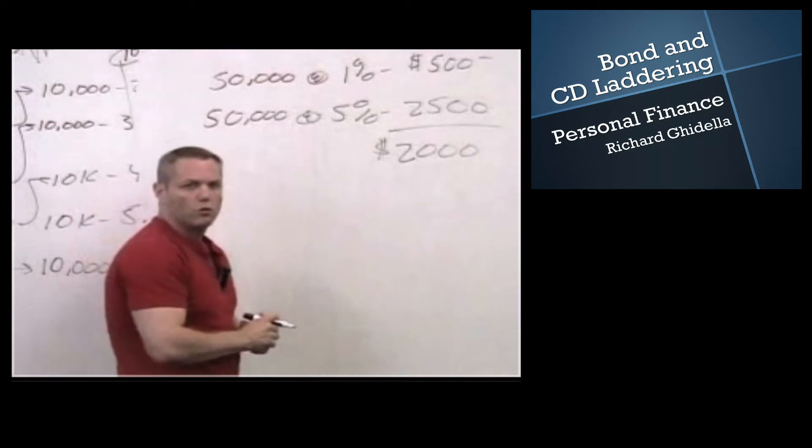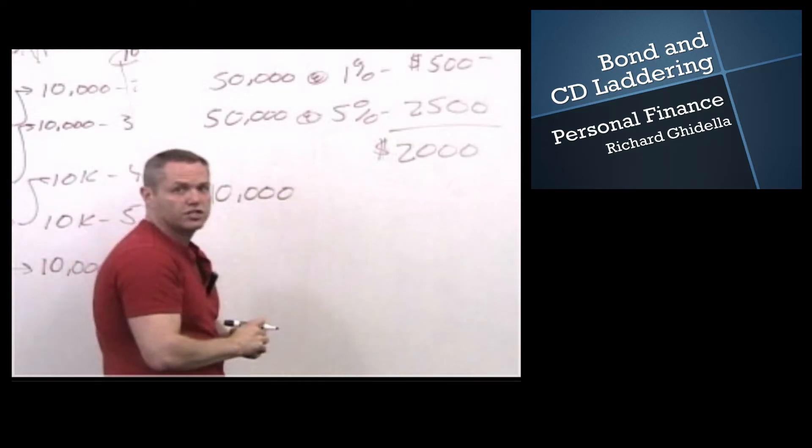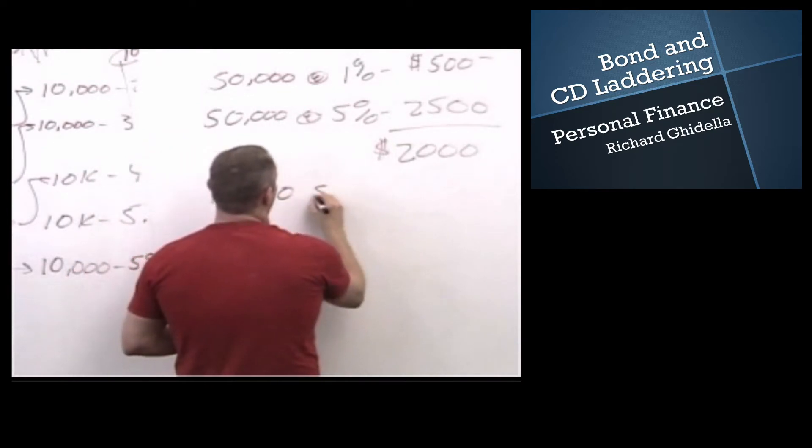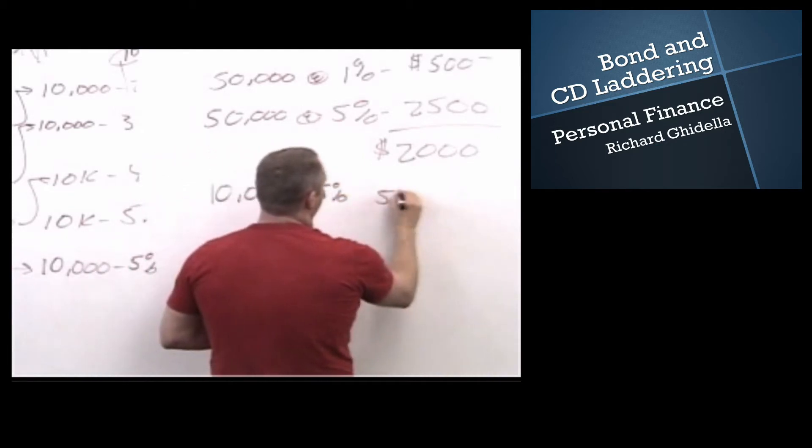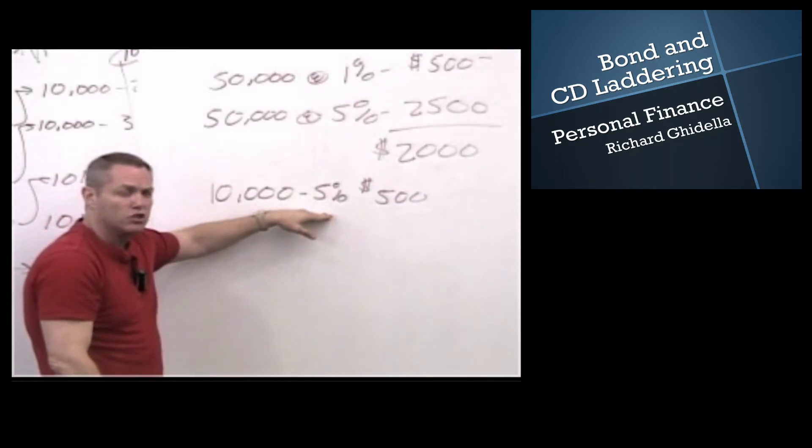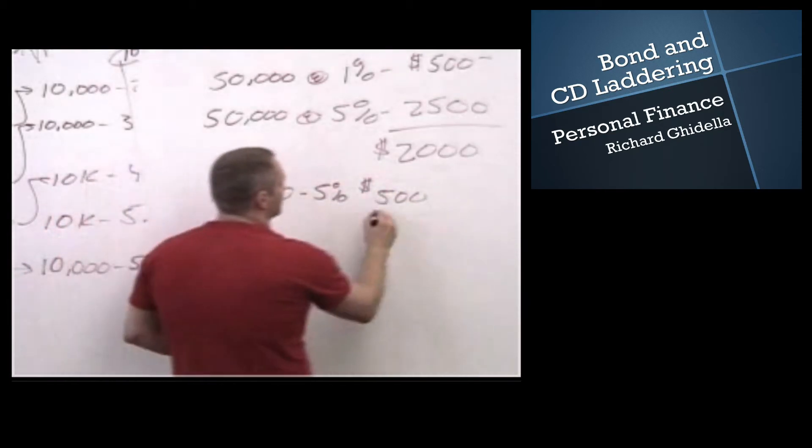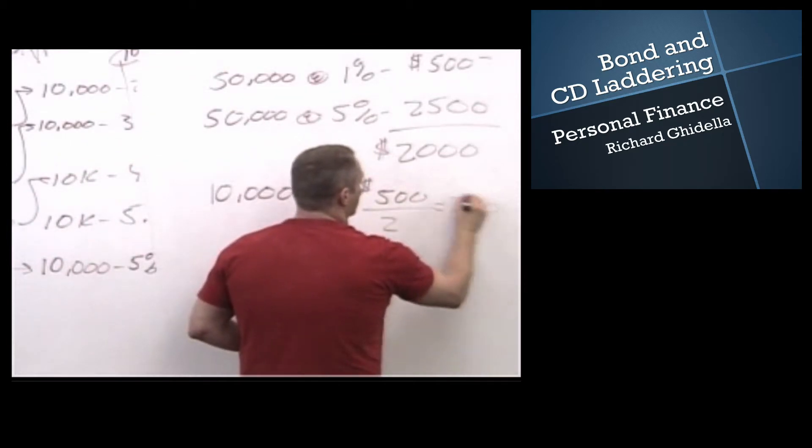So if we're going to break one of our CDs, we're going to break a $10,000 CD, and let's say it's a five-year CD that's yielding 5%, which means it pays $500 a year. Typically, we're going to be charged a six-month interest penalty, so we're going to divide this by two, and we're going to get an interest penalty of $250.